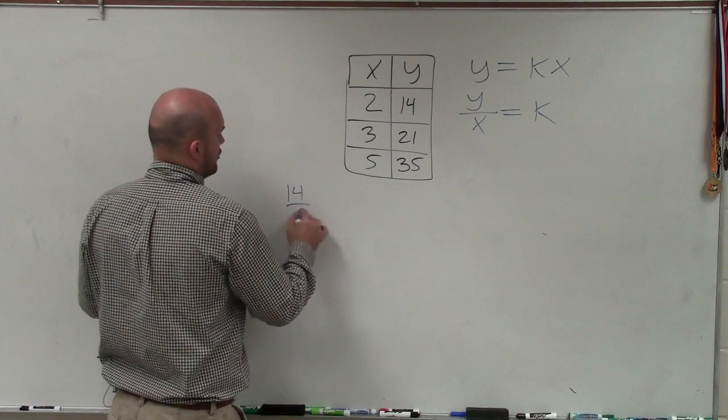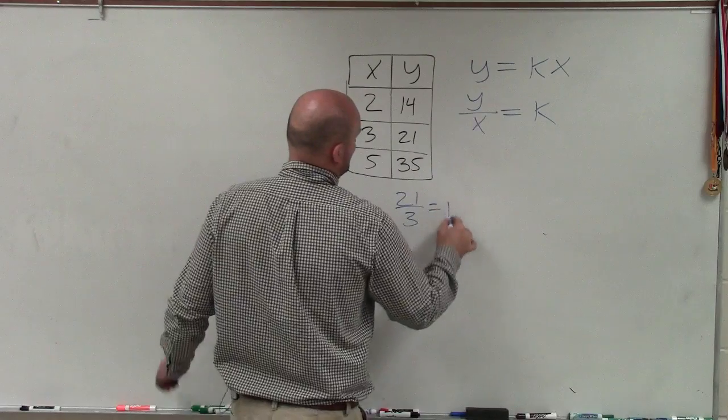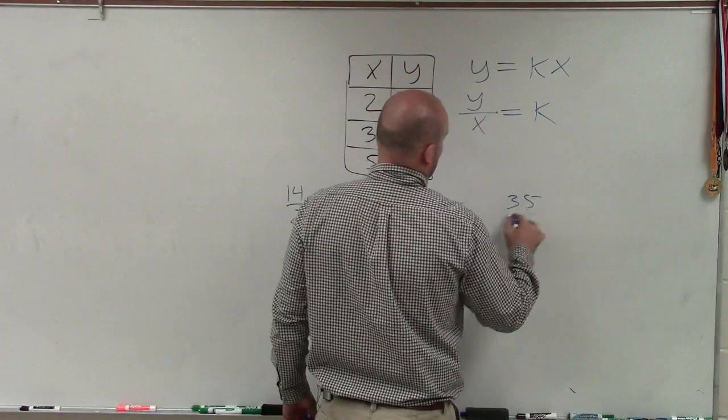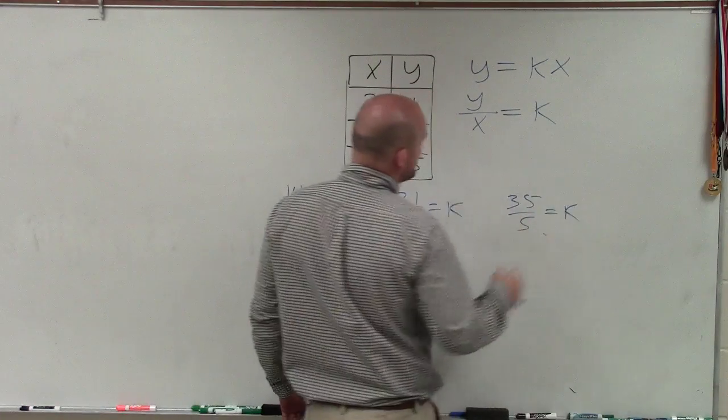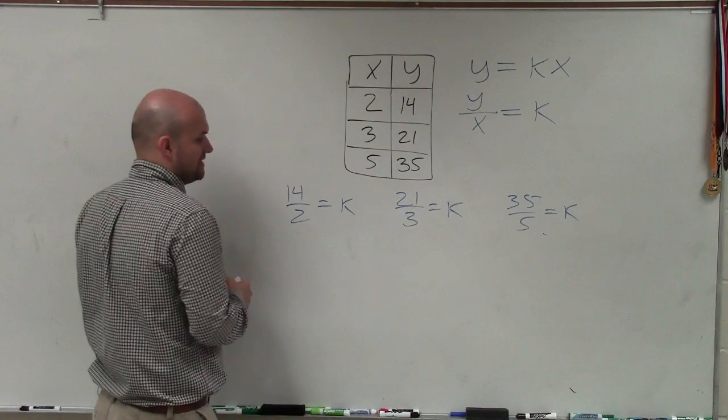So I'll take 14 over 2 equals k, 21 over 3 equals k, and 35 over 5 equals k. As long as our k is equal for each of these three points, then we have direct variation where y varies directly with x.